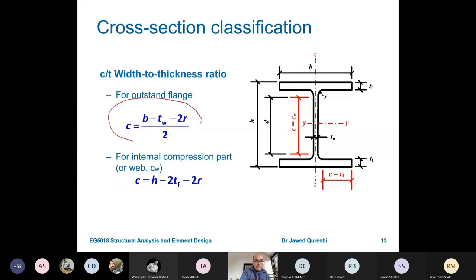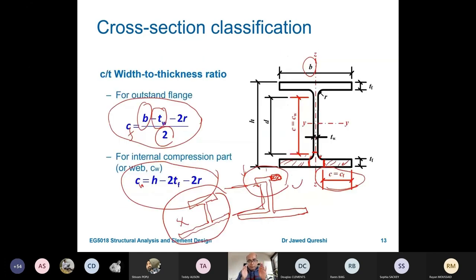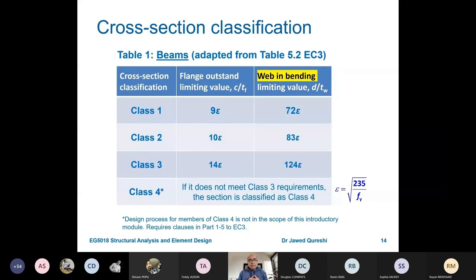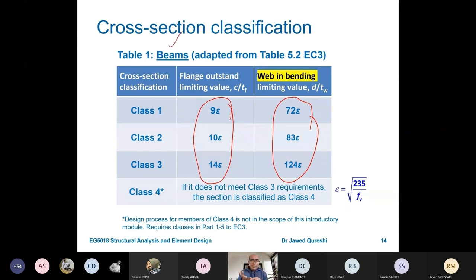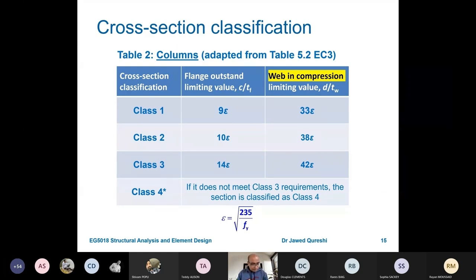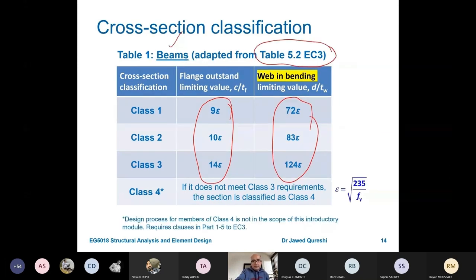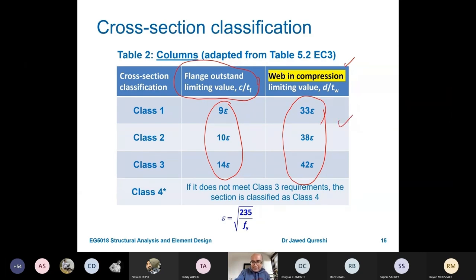Once you have C_F / T_F from your chosen section, you compare it with the limiting values in Euro Code. When classifying a section as a beam, the outstand flanges are in compression and the web is in bending — so you select those two corresponding sub-tables from table 5.2. When classifying as a column, flanges are still in compression with the same limits, but the web (internal compression part) is now in compression, so you select a different sub-table. That is why the web sub-table is highlighted differently for beams versus columns.